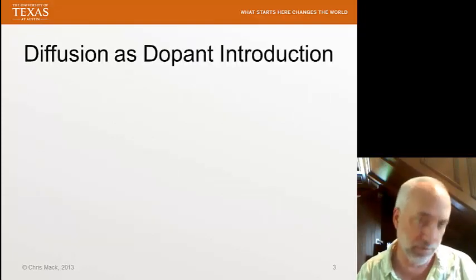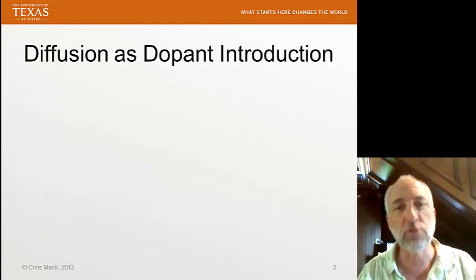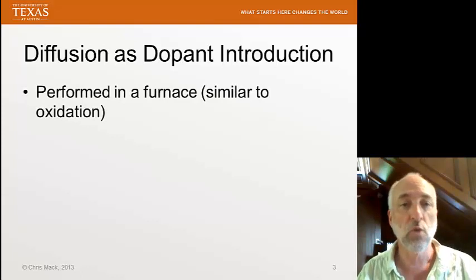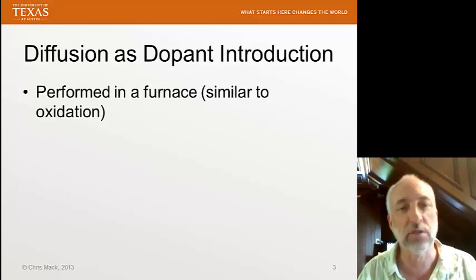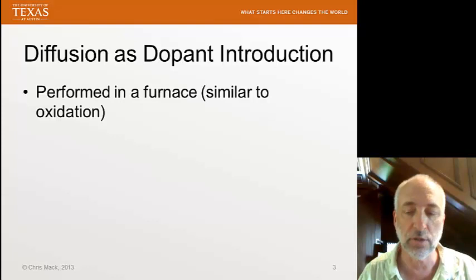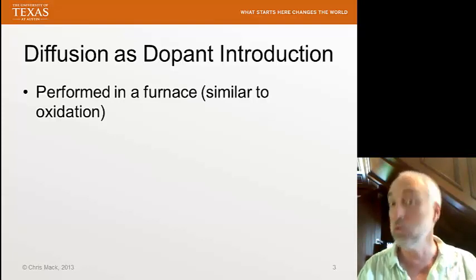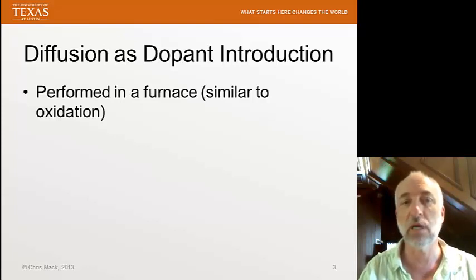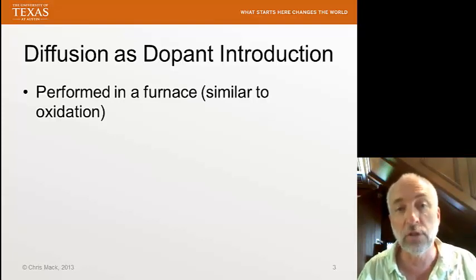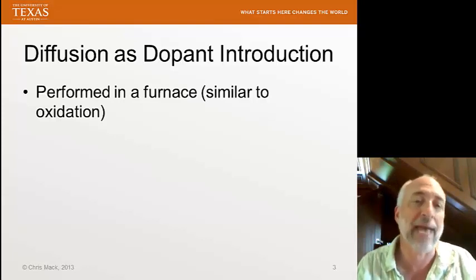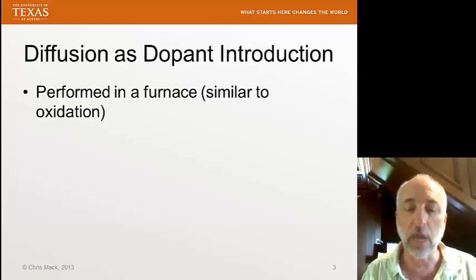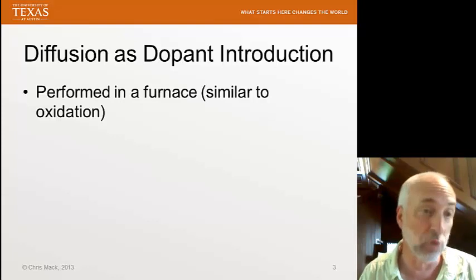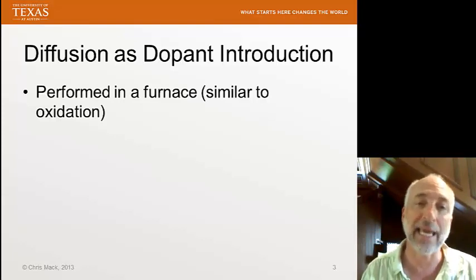Let's look at the earlier meaning of the word diffusion first — diffusion as a dopant introduction method. We added the dopants in a furnace, very similar to the furnace we talked about in the lectures on oxidation. We don't use the exact same furnace because once you put a particular dopant into a furnace, that tube essentially becomes contaminated with that dopant. You don't want to put wafers in there for any high-temperature process step unless you're performing diffusion using that same dopant.